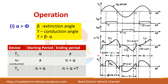The output voltage waveform follows the input voltage whenever a device is conducting, so V0 equals Vs during conduction. Starting from alpha it follows the input voltage waveform until beta, and from beta to pi plus alpha the output voltage is zero since no device is conducting.